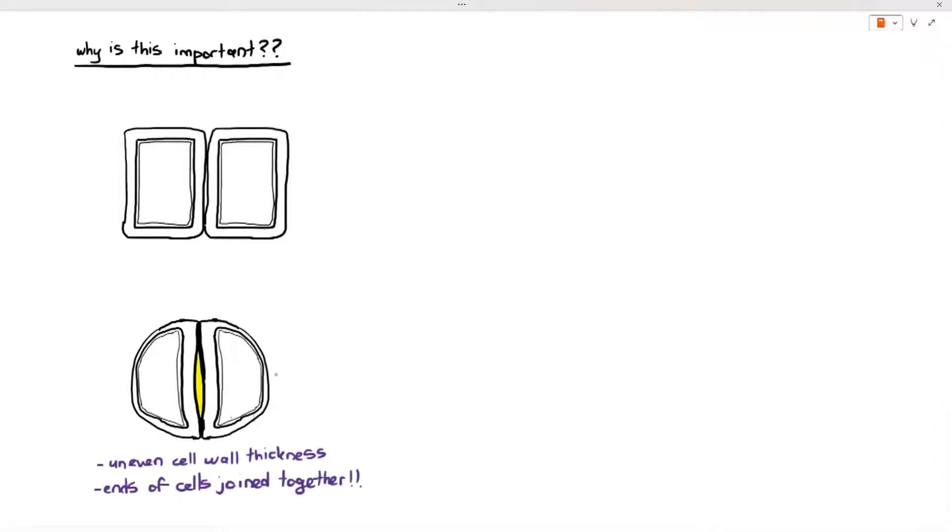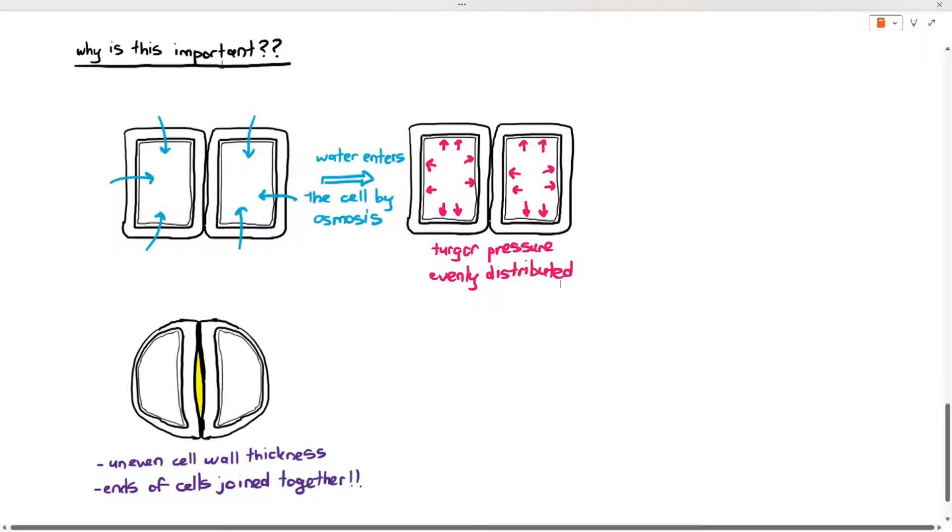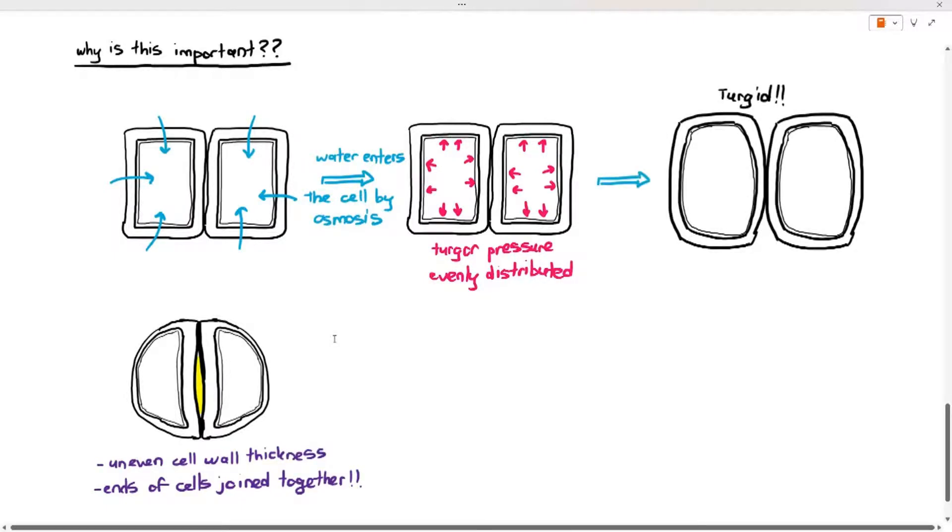Now remember the guard cells have uneven cell wall thickness and the end of the cells are joined together. Now look at the cell at the top, the two normal plant cells. If water were to enter the cells by osmosis, water from the cytoplasm will push against the cell wall and that arrow represents the turgor pressure. Turgor pressure is evenly distributed at the top, at the left, at the right, at the bottom, everything seems fine. And look at what happens to the cells, the plant cells become turgid because they have expanded.